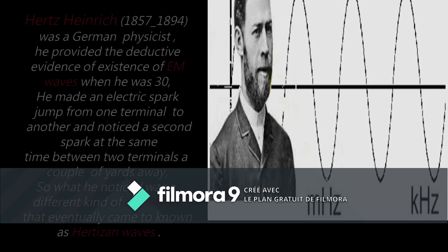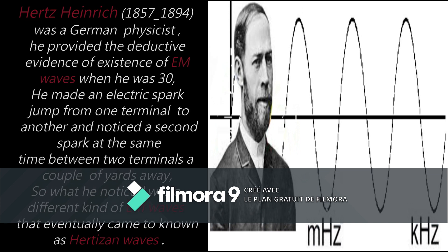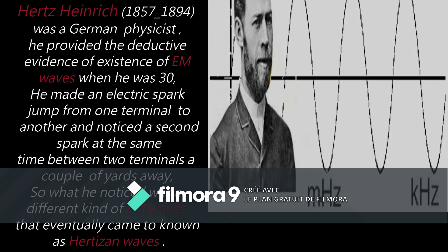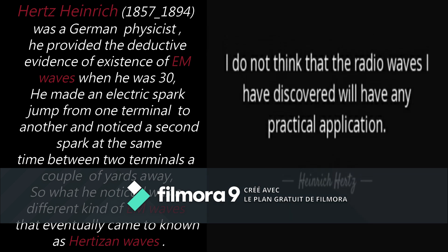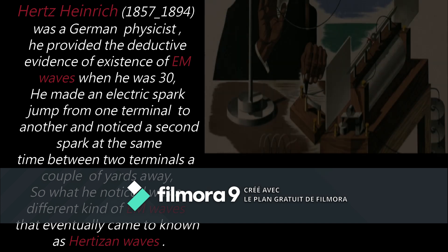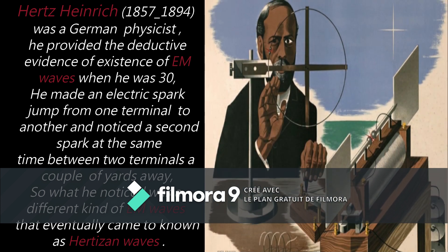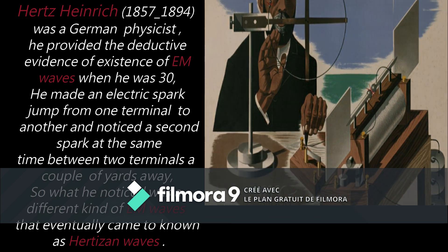Heinrich Hertz was a German physicist. He provided the first deductive evidence of the existence of EM waves when he was 30. He made an electric spark jump from one terminal to another and noticed a second spark at the same time between two terminals a couple of yards away. What he noticed was a different kind of EM waves that eventually came to be known as Hertzian waves.